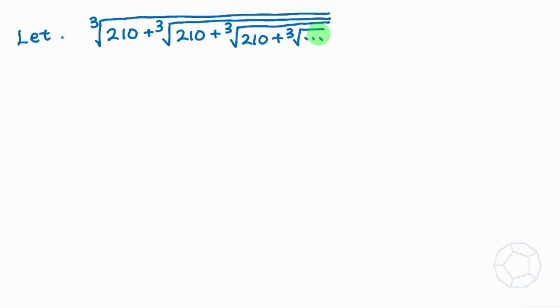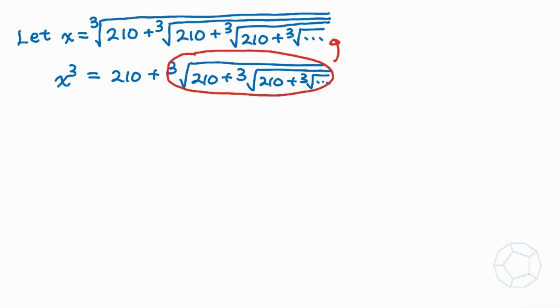First of all, we're gonna let x be the value of the whole expression. Next we take x cube so that the right hand side is 210 plus the cube root of 210 plus the cube root of 210 up to infinity. Now we can see that the second part on the right hand side is exactly the same as the previous expression. Therefore we can replace it with x, so we obtain an equation x cube is equal to 210 plus x.